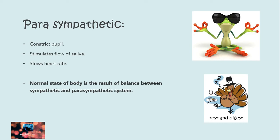If we talk about the Sympathetic Nervous System, it is totally opposite to the Parasympathetic. In a normal state of an individual, there is a balance between these two systems.